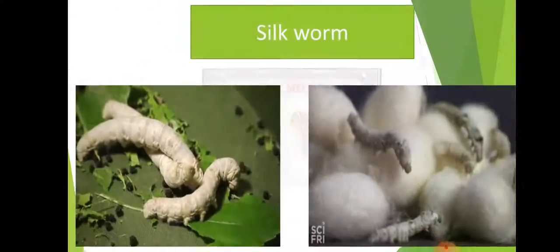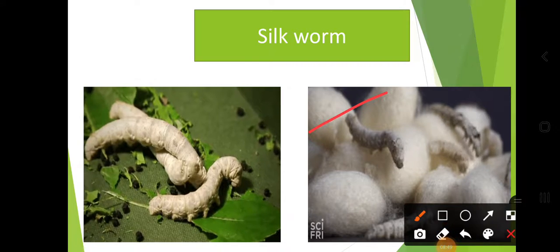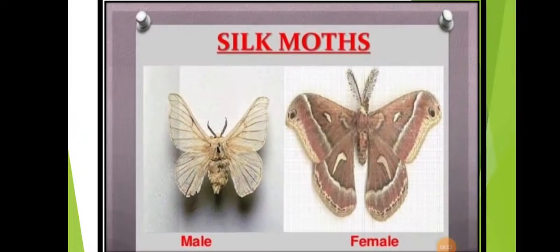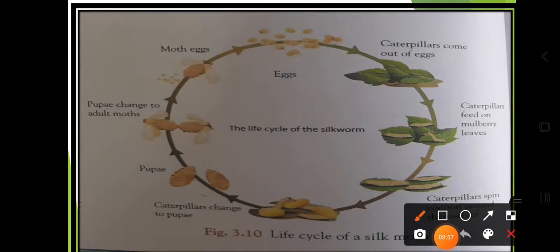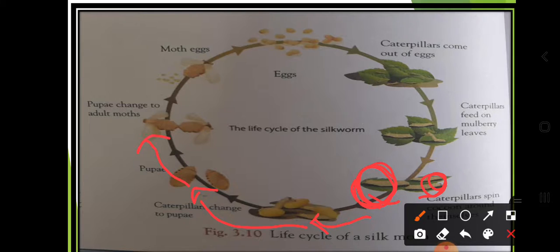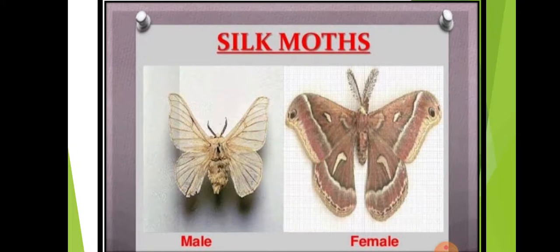After feeding, the caterpillar spins a cocoon around itself. The white balls you see are the cocoons. Finally the caterpillar changes into a pupa, and the pupa then changes into the adult moth. The adult moth now has wings.